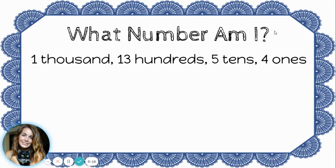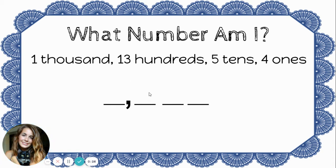Here I have one thousand, thirteen hundreds, five tens, and four ones. I see thousands, hundreds, tens, and ones, so I know that I will need a thousands place, a hundreds place, a tens place, and a ones place to write this number.